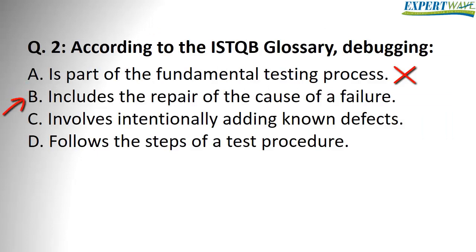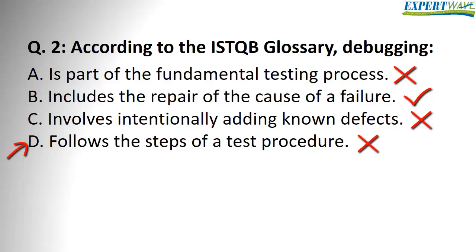Option B: debugging includes the repair of the cause of the failure. This is correct — debugging is finding the defect that is the cause of the failure and repairing it. Option C: debugging involves intentionally adding known defects — this is obviously wrong. Option D: debugging follows the steps of a test procedure — this is the execution part of the testing activity, so it has nothing to do with debugging. The correct answer is B.